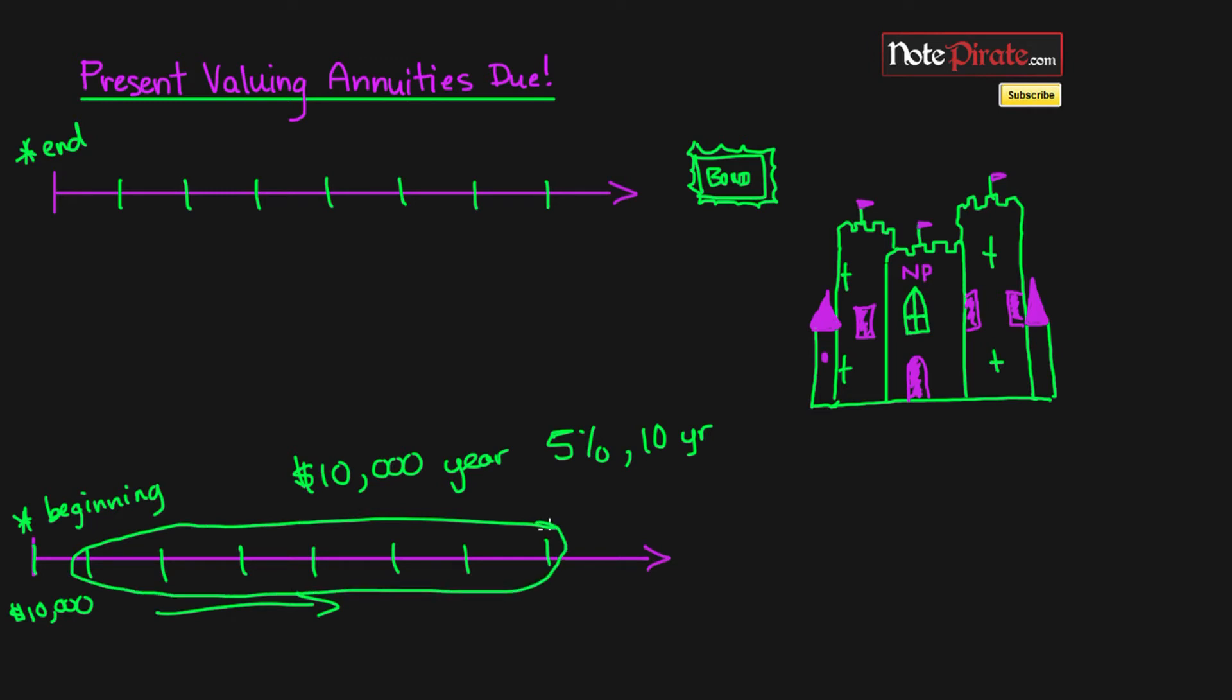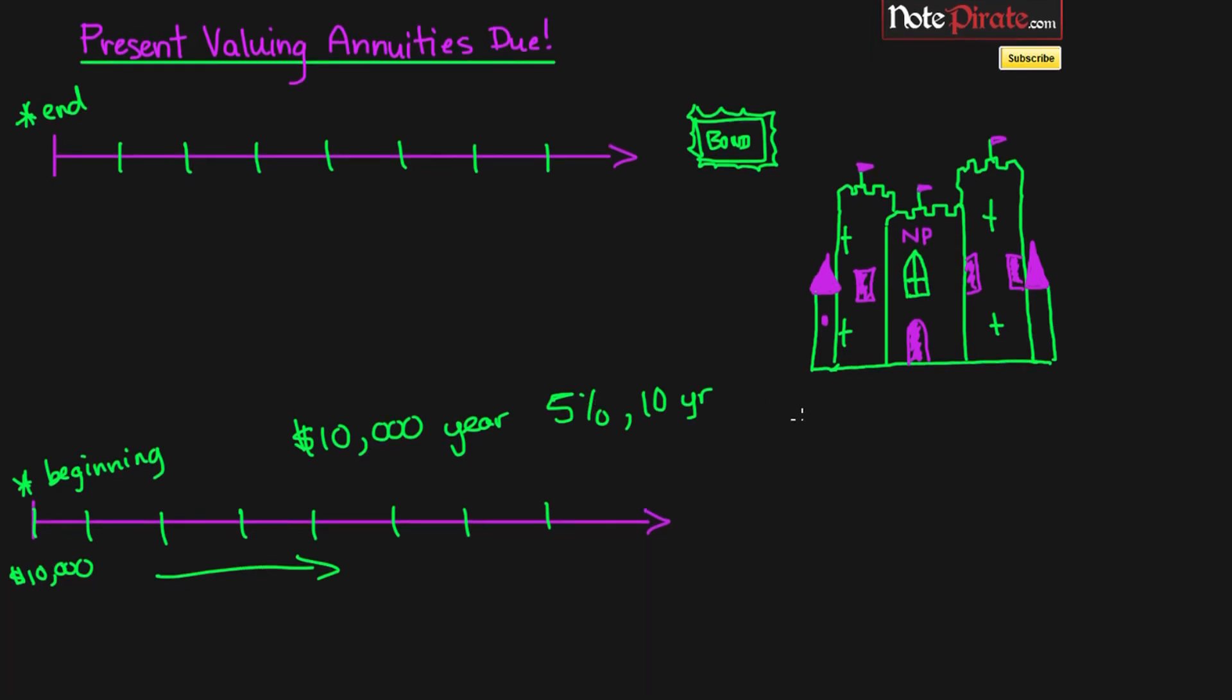The only difference between the annuity and the annuity due formula or the annuity due timeline is that there's this initial beginning cash flow. So what we can do is we can use the annuity formula to calculate the present value of these cash flows and then just add the beginning cash flow of ten thousand dollars.